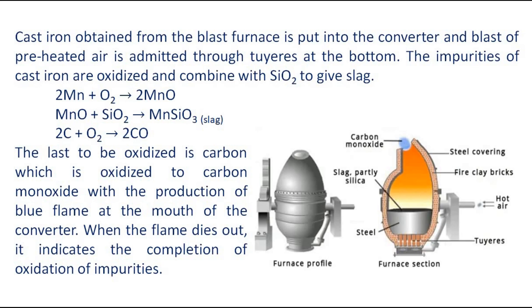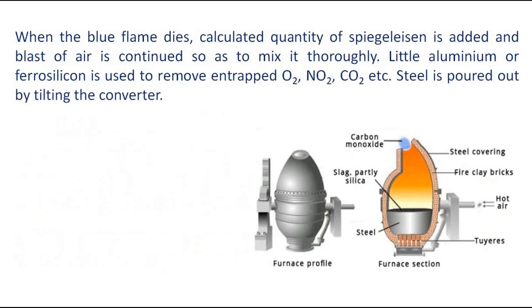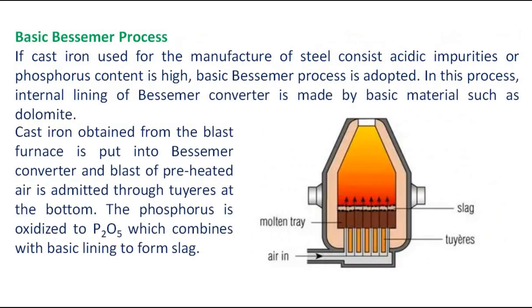When the flame dies out, it indicates the completion of oxidation of impurities. When the blue flame dies, a calculated quantity of spiegeleisen is added and a blast of air is continued so as to mix it thoroughly. A little aluminum or ferrosilicon is used to remove entrapped oxygen, nitrogen dioxide, carbon dioxide, etc. Steel is poured out by tilting the converter.